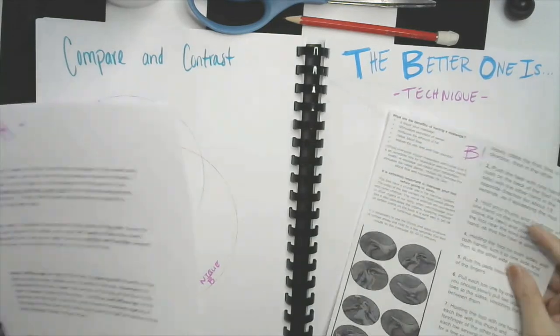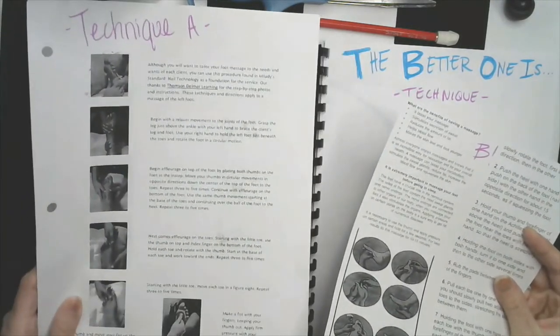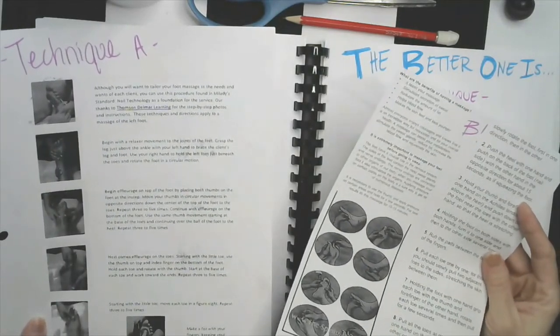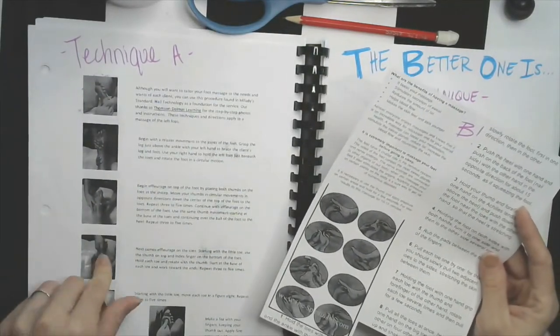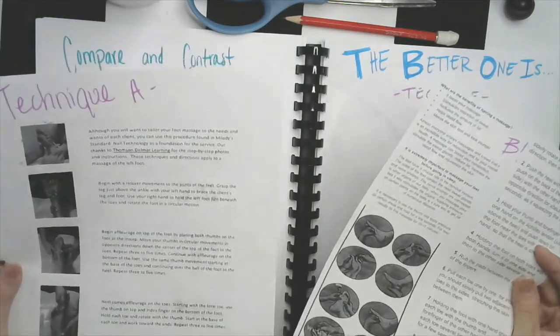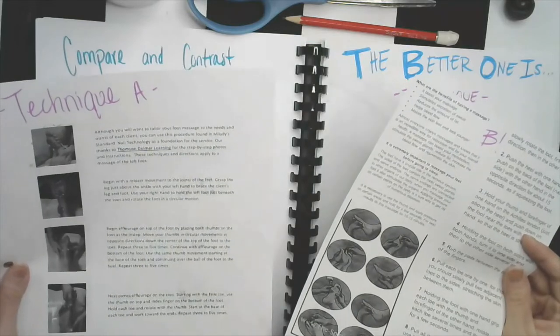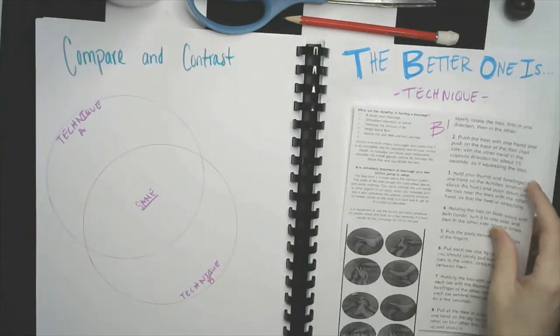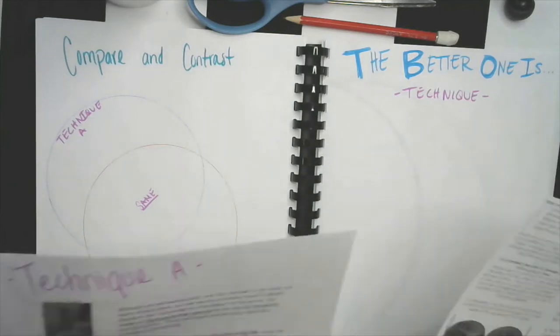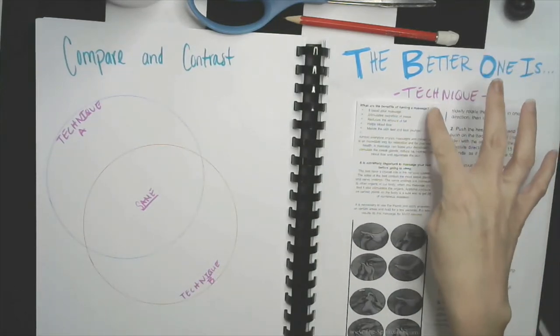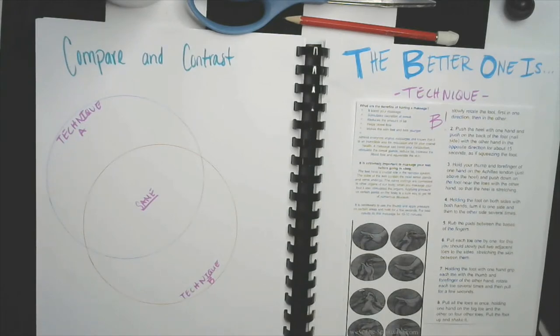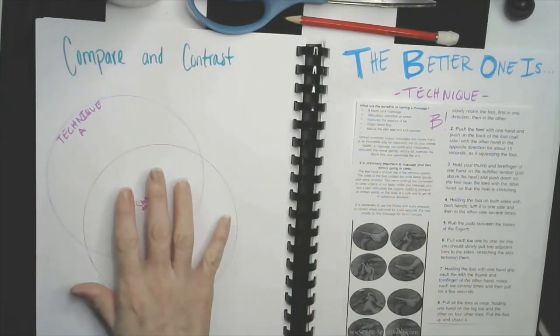So again, you're gonna do both techniques on you: technique A with the rectangles, technique B with the circles - they're ovals, okay. Do both, pick which one you like the best. You're going to glue the one that you like the best on the right-hand side of the page, label it with your technique letter, and then you're going to compare and contrast the two - what is the same and what is different.